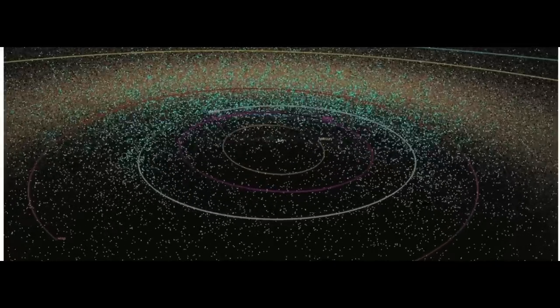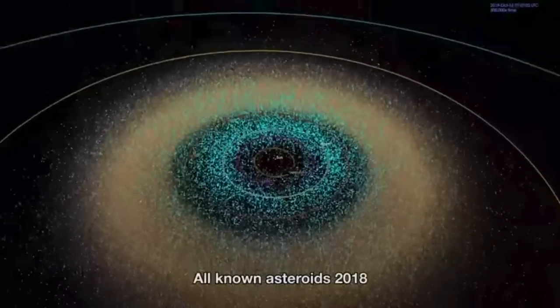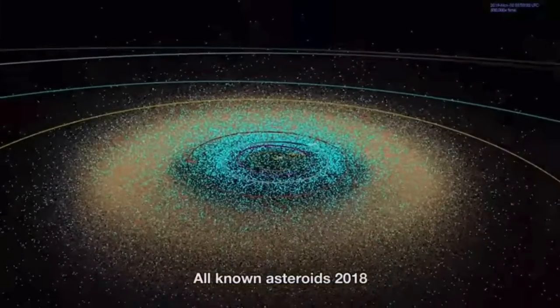Near-Earth objects are asteroids and comets in orbits that bring them into the inner solar system within 121 million miles, 195 million kilometers of the sun, and also within roughly 30 million miles or 50 million kilometers of Earth's orbit around the sun.